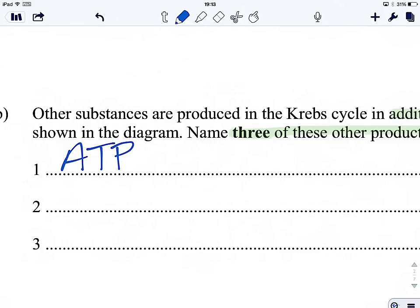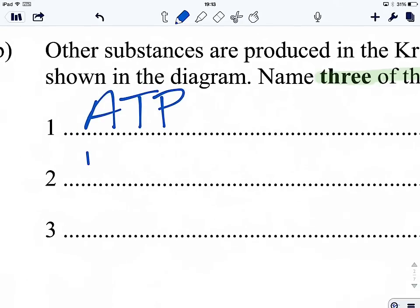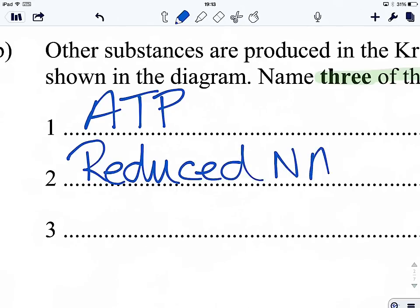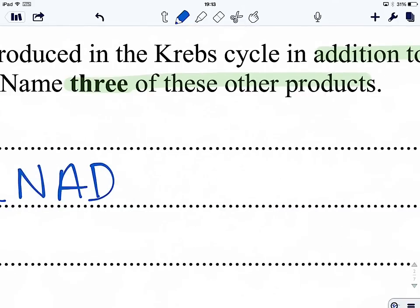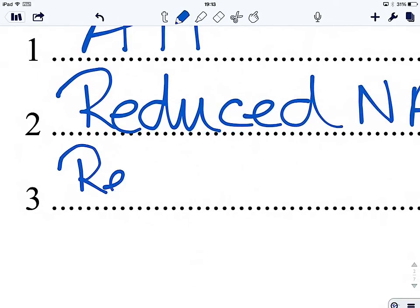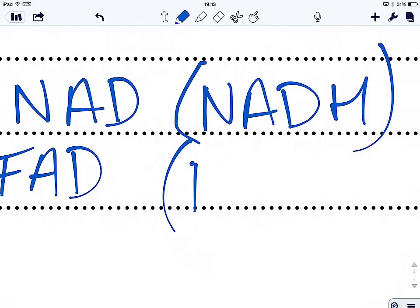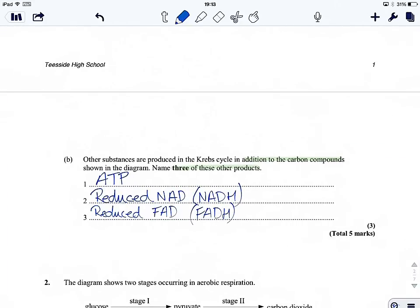And we've also got the two reduced coenzymes. So that's reduced NAD, also known as NADH. Either one is acceptable, as is NADH2 if you want to be pedantic. And then the second one is reduced FAD, also known as FADH or FADH2. There we go. Three compounds, three marks, done.